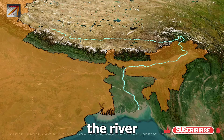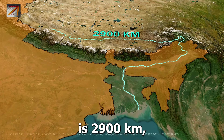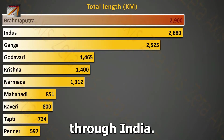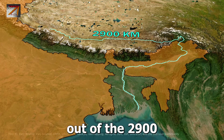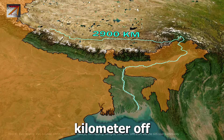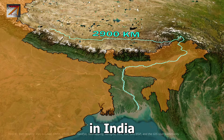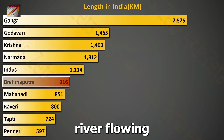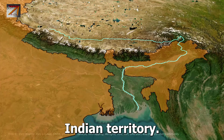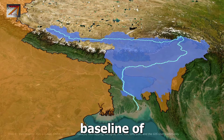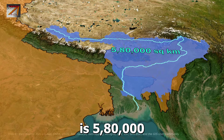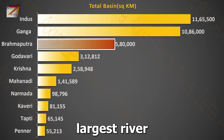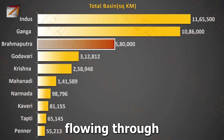The total length of Brahmaputra River is 2900 km, making it the longest river flowing through India. However, out of the 2900 km total length, Brahmaputra in India flows for 916 km, making it the 6th longest river flowing within Indian territory. The total drainage basin of Brahmaputra River is 580,000 km², making it the 3rd largest river basin for a river flowing through India.